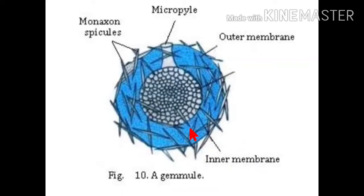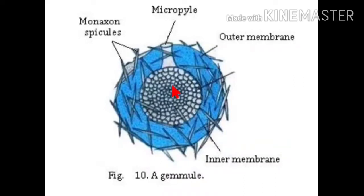In summary, freshwater and marine sponges show a peculiar mode of asexual reproduction called gemmule formation. The gemmule contains food-laden archaeocytes covered by an inner protective membrane, surrounded by a gelatinous material supported by monoclonal spicules, and covered by an outer membrane. The archaeocytes communicate through a micropyle and have the capacity to develop into any kind of cell, including gametes and tissue formation.